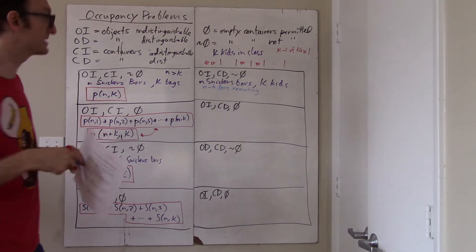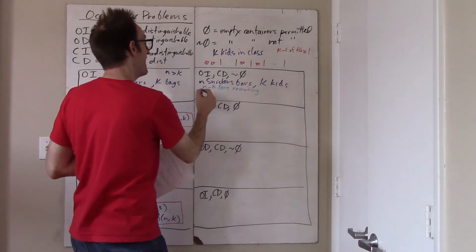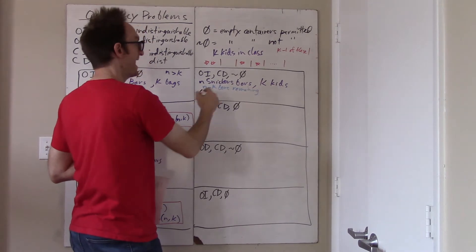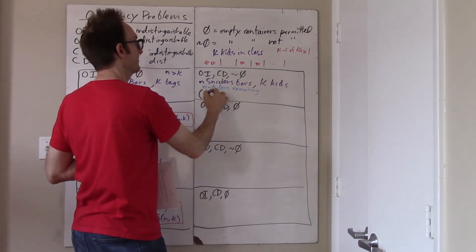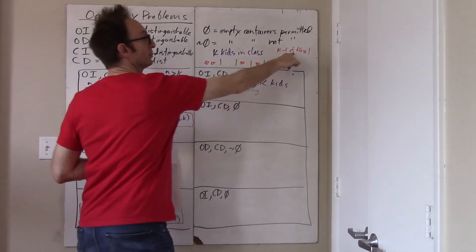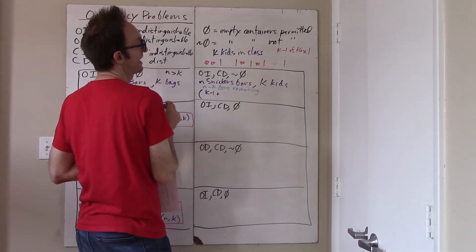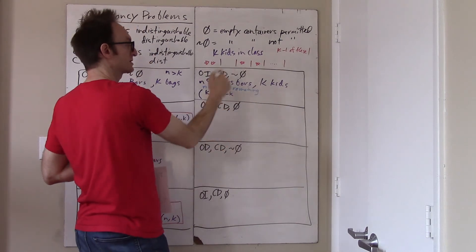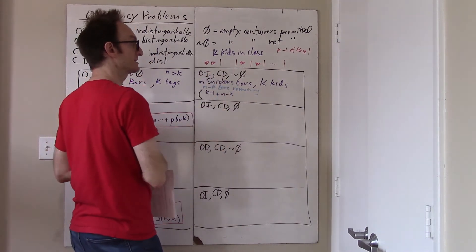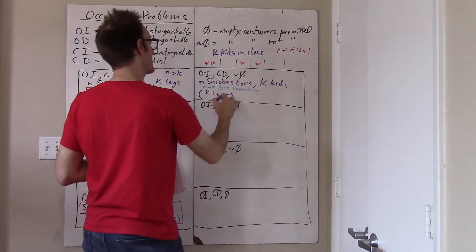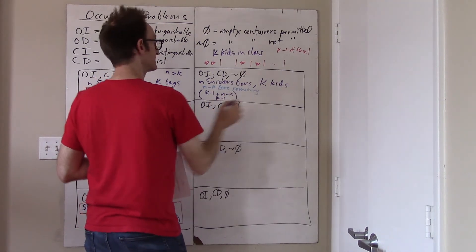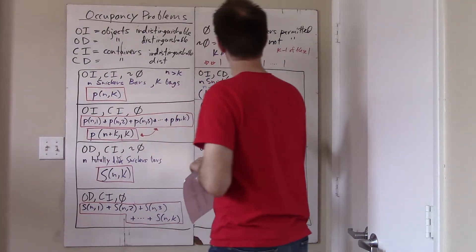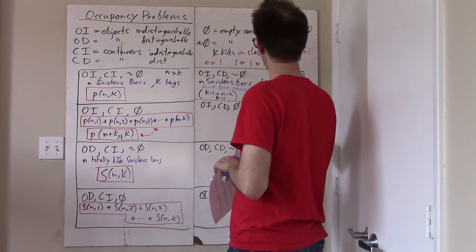So how many characters do I have in this string? I have K minus one vertical lines plus N minus K stars — the stars being the remaining Snickers — choose K minus one. And that simplifies more nicely into C(N minus 1, K minus 1).